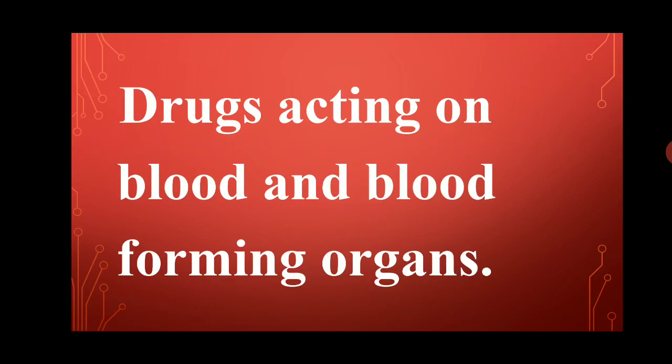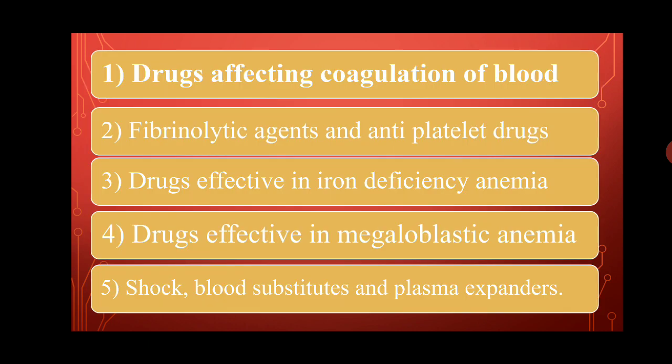The previous lecture covered drugs acting on blood and blood-forming organs. This unit considers five chapters: drugs affecting coagulation of blood, fibrinolytic agents and antiplatelet drugs, drugs effective in iron deficiency anemia, drugs effective in megaloblastic anemia, and lastly shock, blood substitutes and plasma expanders.